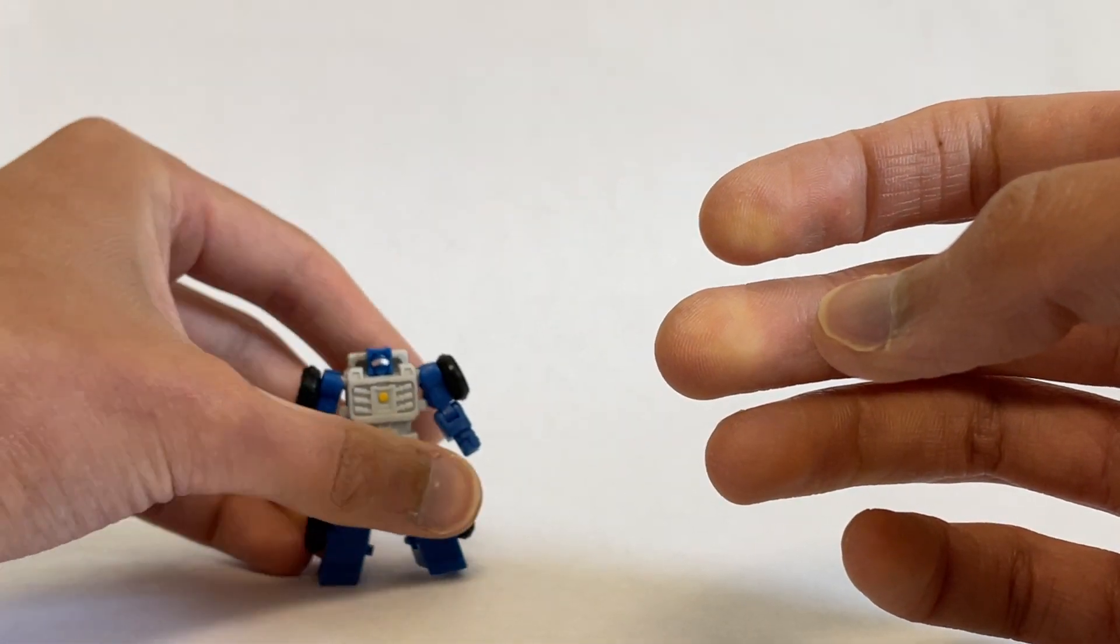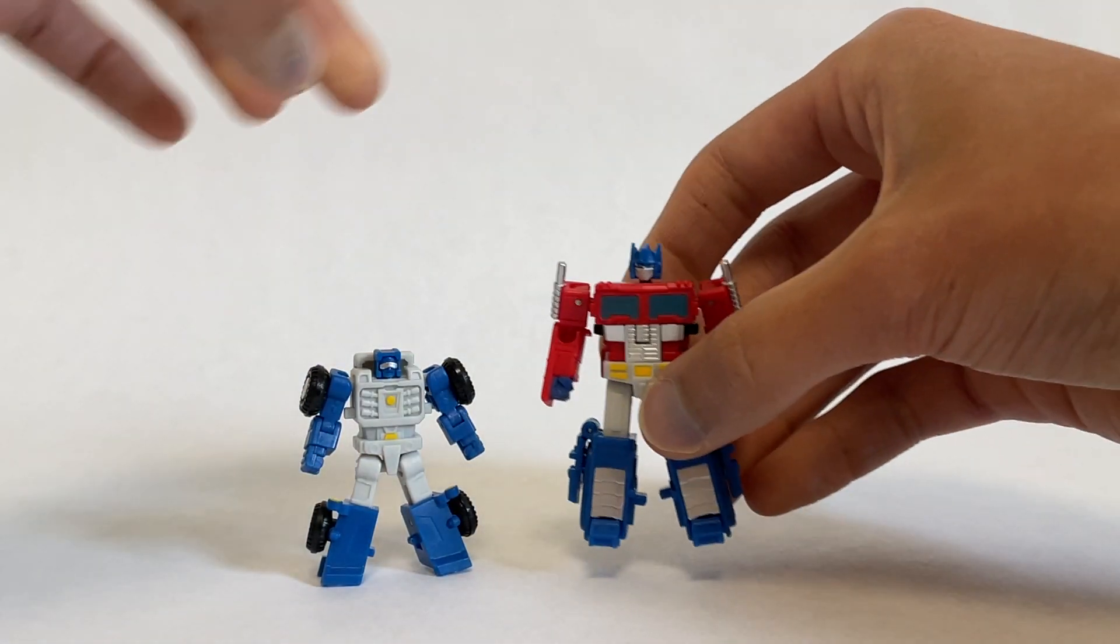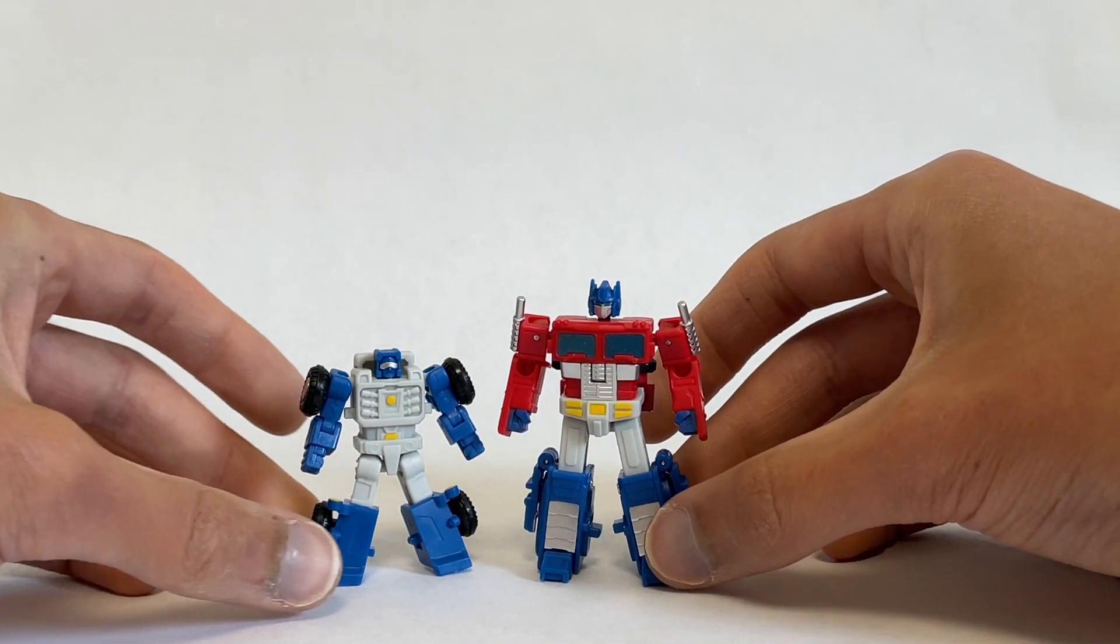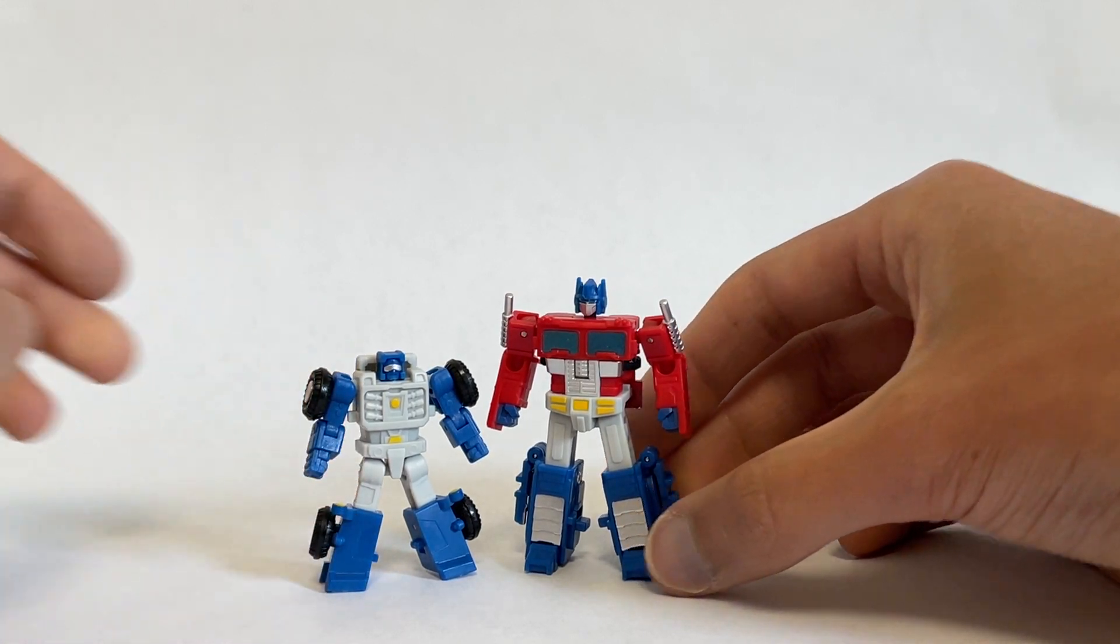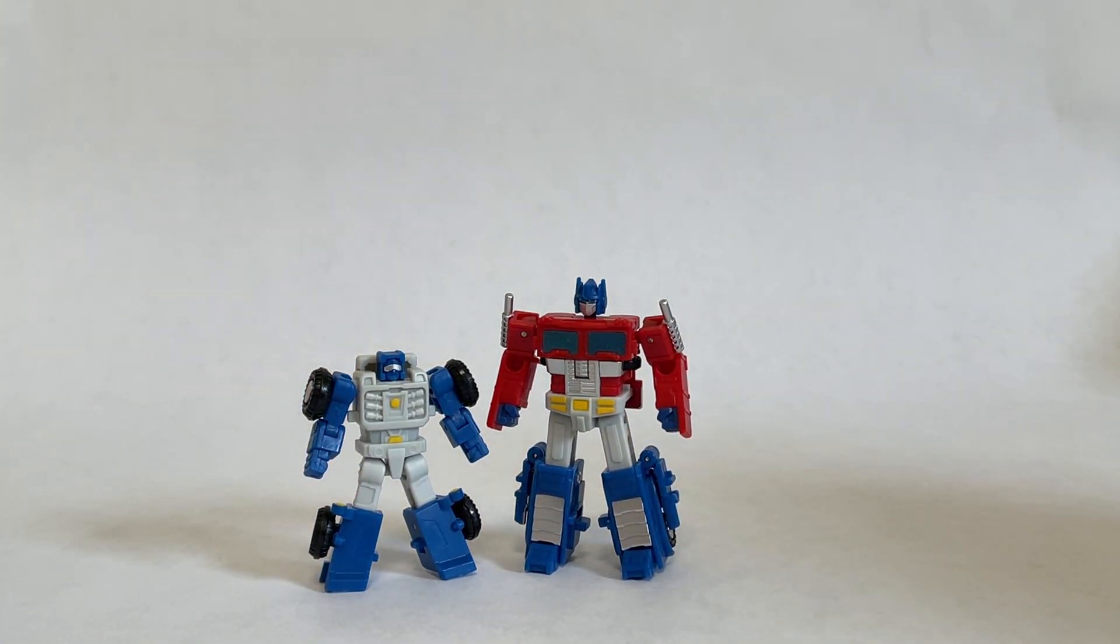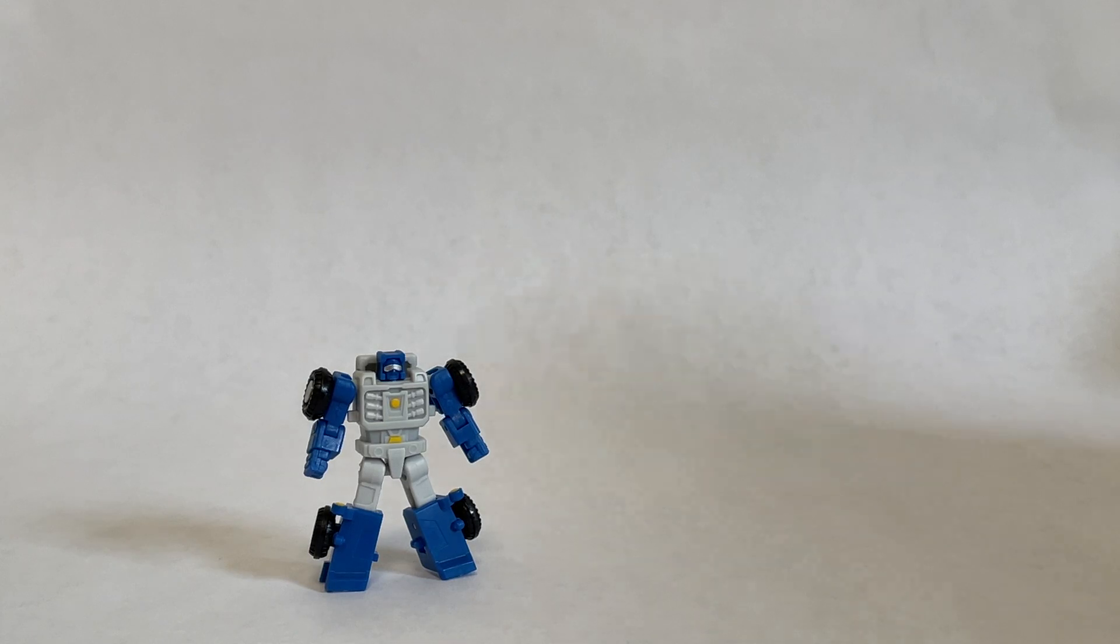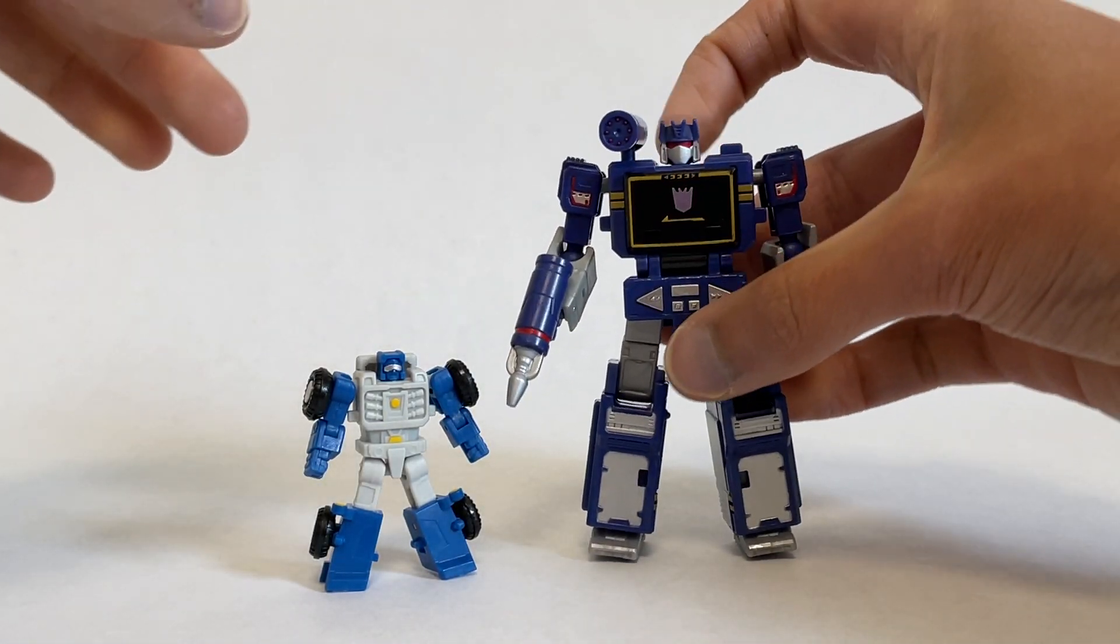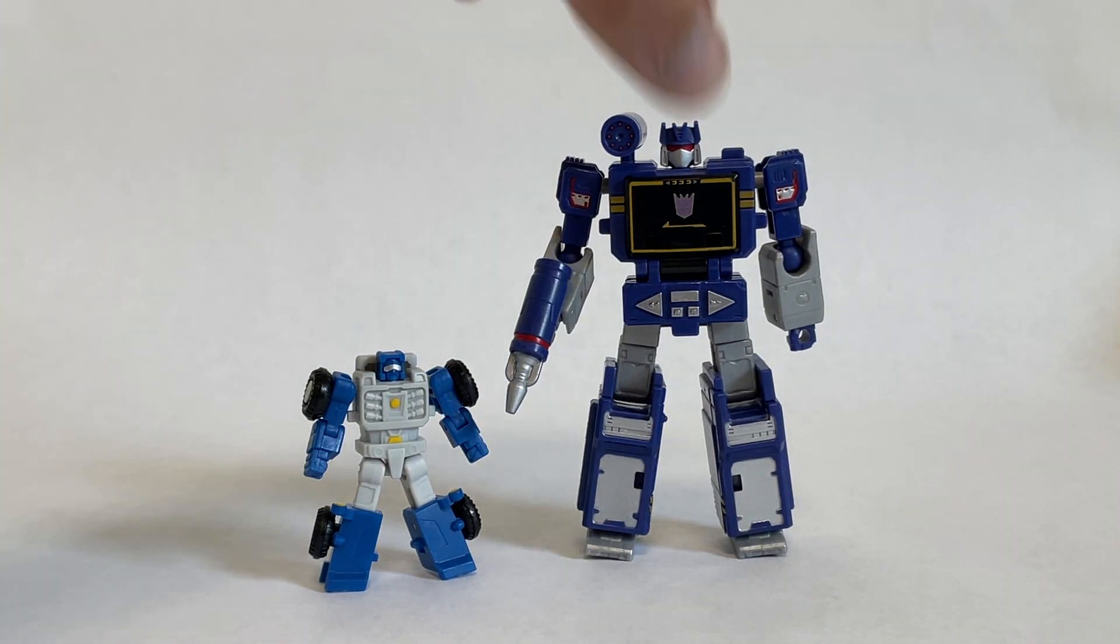I'll just do a quick size comparison with Dr. Wu's Prime Commander, of course. And I think they scale pretty nicely with one another, Prime being a good bit taller than Beachcomber in the cartoon, and that's reflected here between the two models. And then just real quick here, since I have them handy, I'll just take a look next to Core Class Soundwave, just for a general size class comparison. See, yes, very tiny.